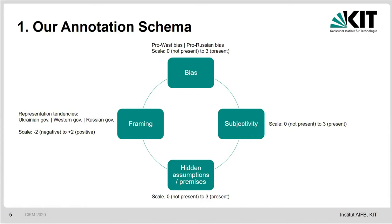And then finally, we have framing. The idea of framing is to make something more salient in a text in such a way as to promote something, for instance, a causal interpretation. Framing is also defined with respect to something — for example, with respect to the Ukraine government, the Western government, or the Russian government. We use a scale from minus 2 to 2, meaning there is a negative or a positive framing with respect to the governments.